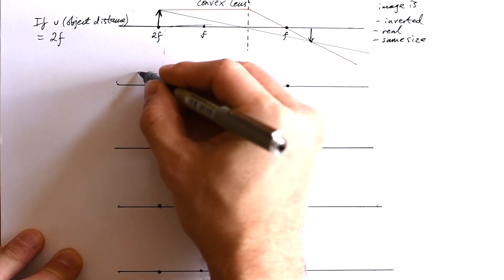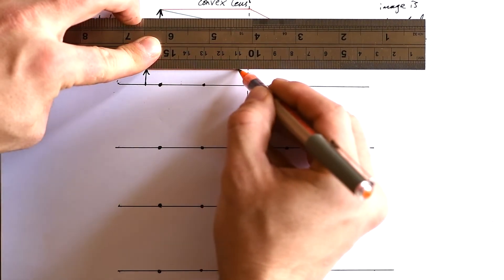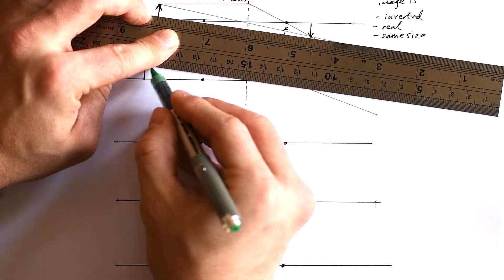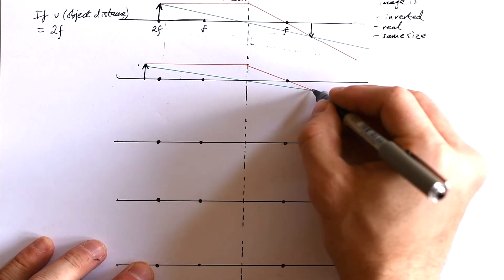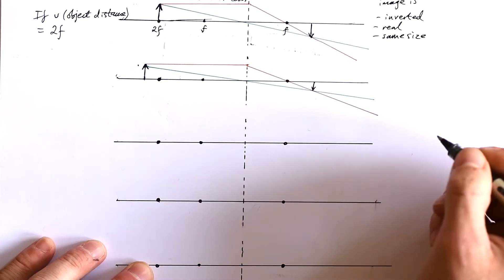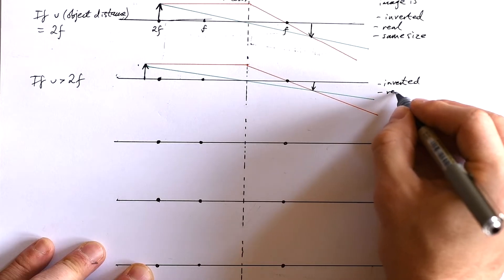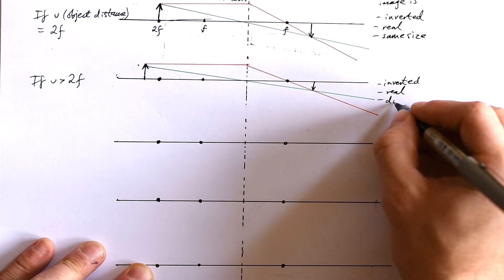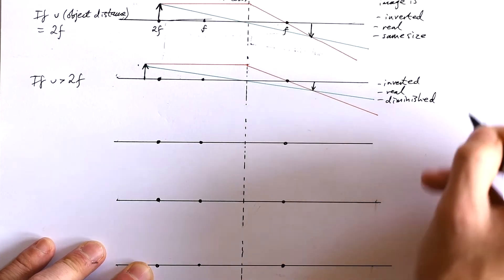What about if I put my object more than two focal lengths away? Let's draw the rays again: parallel in through the principal focus, and then straight through the center of the lens. This is where my image will end up. It's fairly similar - it's inverted and real again. But my image is smaller. We say it's diminished, which is the opposite of being magnified.